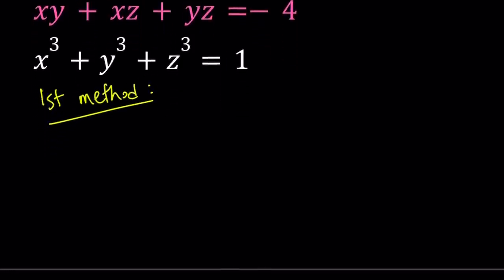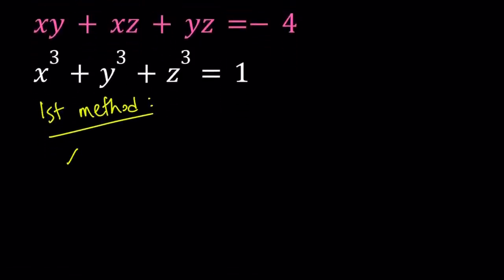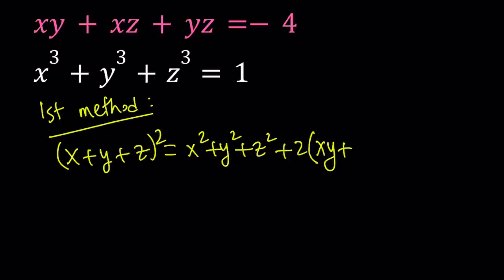For my first method, I'm going to square x plus y plus z. And this is equal to x squared plus y squared plus z squared, and then we have two times the quantity xy plus xz plus yz.